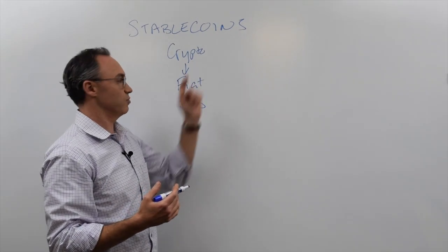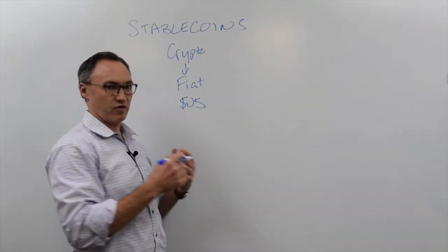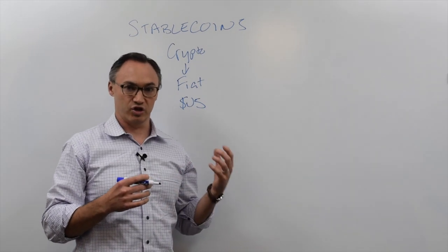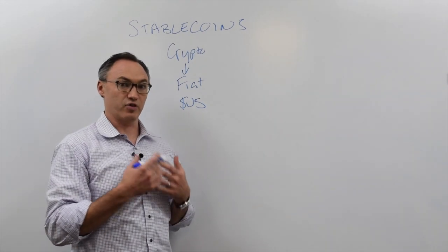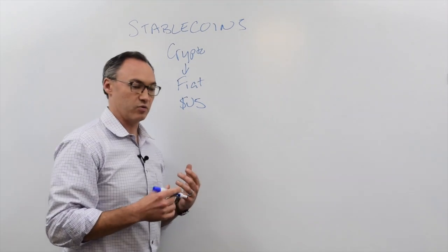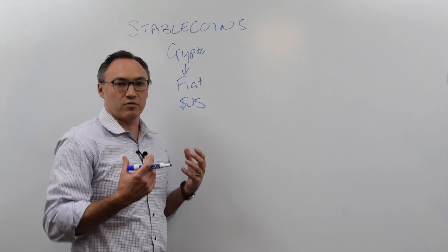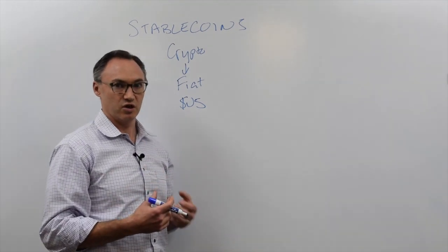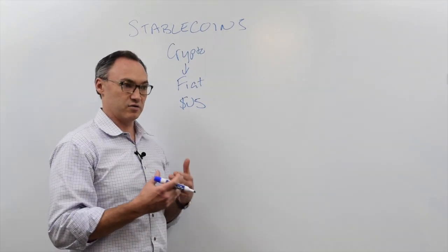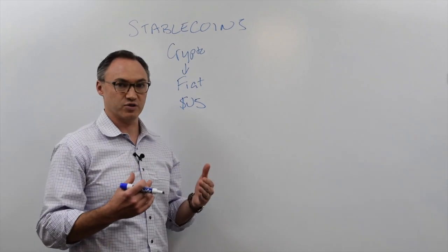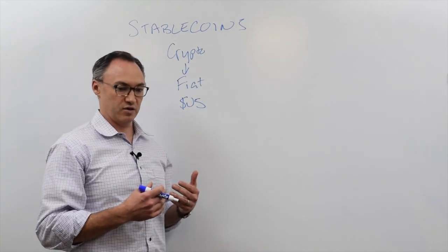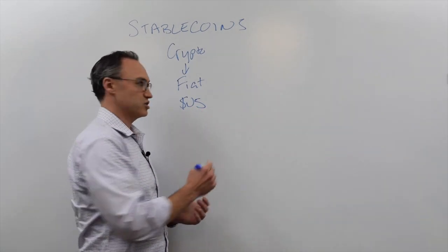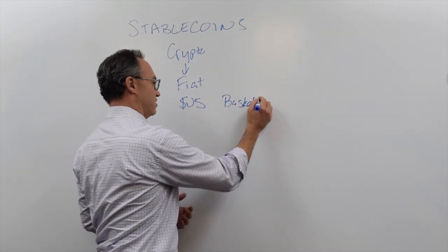Most stablecoins are pegged to the U.S. dollar, and they do it in a variety of ways. But first, we need to talk about what happens with the U.S. dollar or the euro or the pound — why we need it stable. The idea is I have U.S. dollars in the bank, and the government wants me to feel comfortable that when I go to spend those — buy coffee, groceries, a car — a dollar today is worth roughly what it was yesterday, plus some level of inflation.